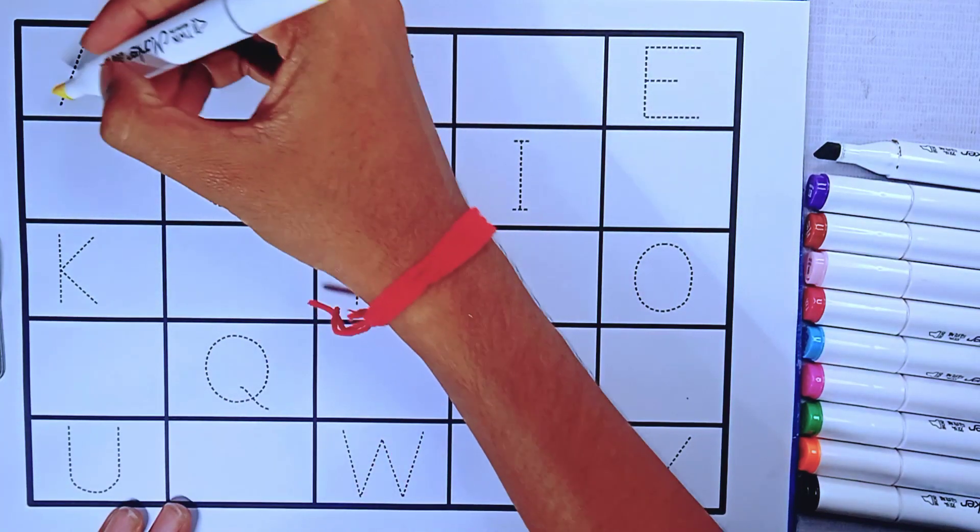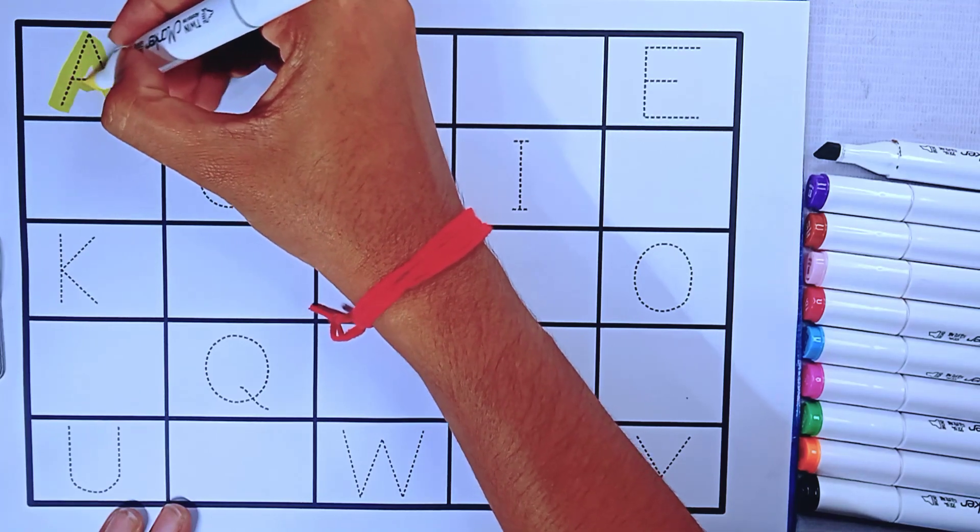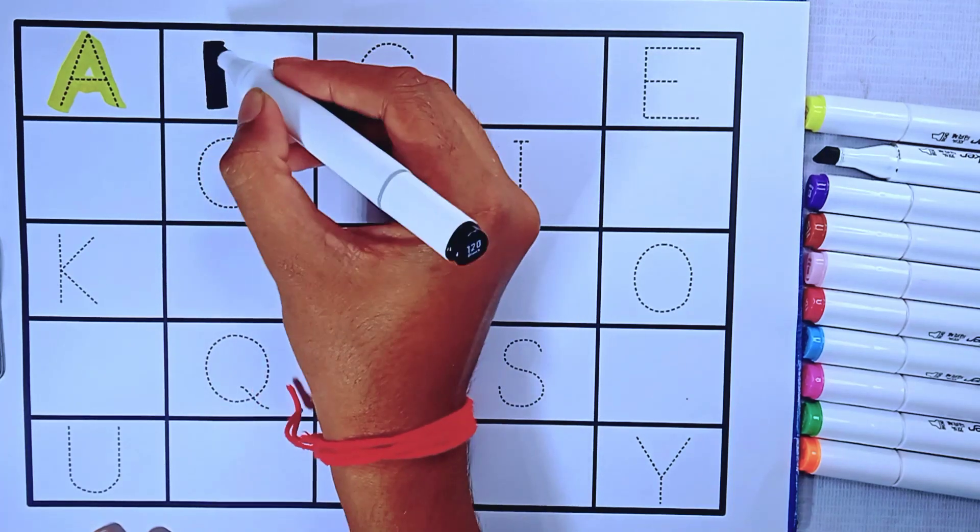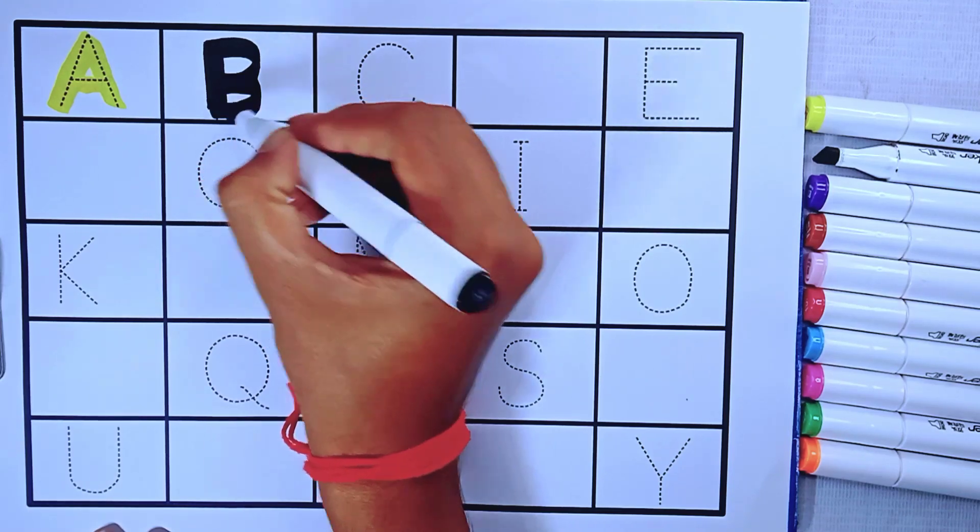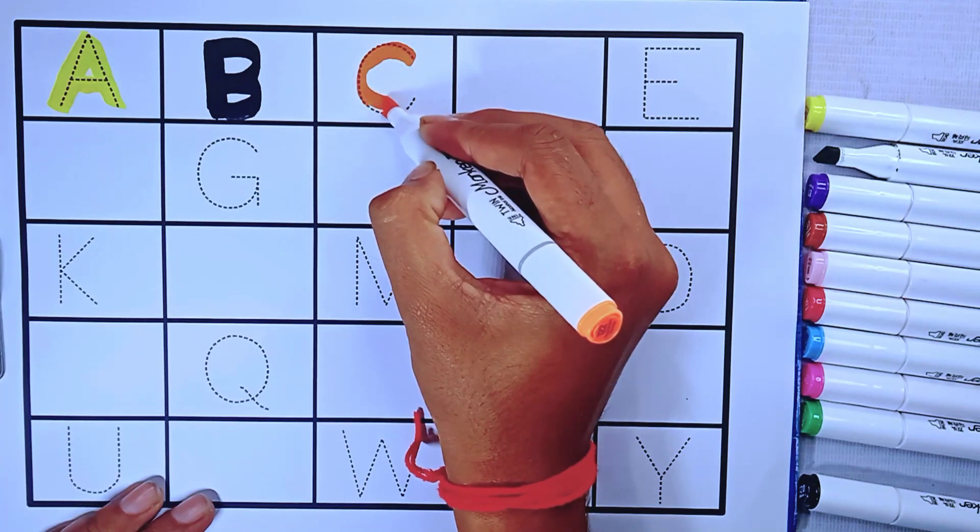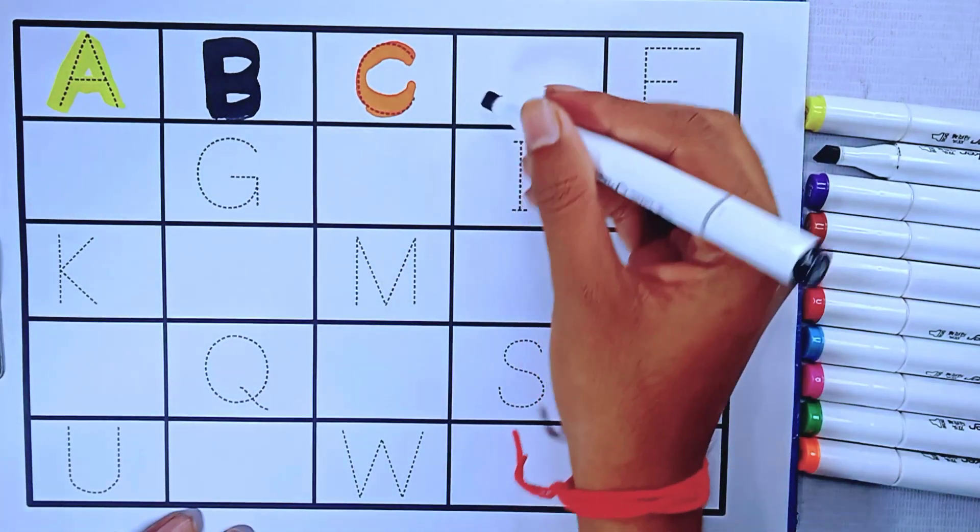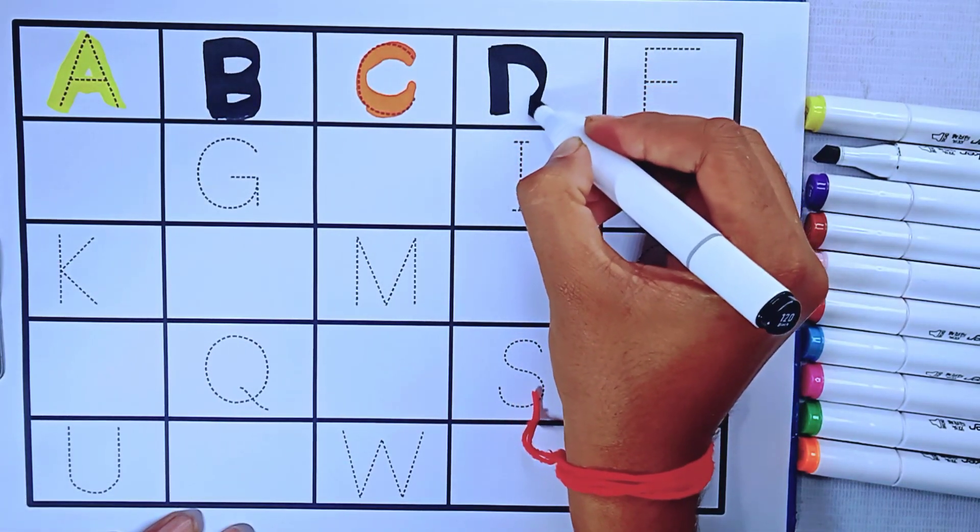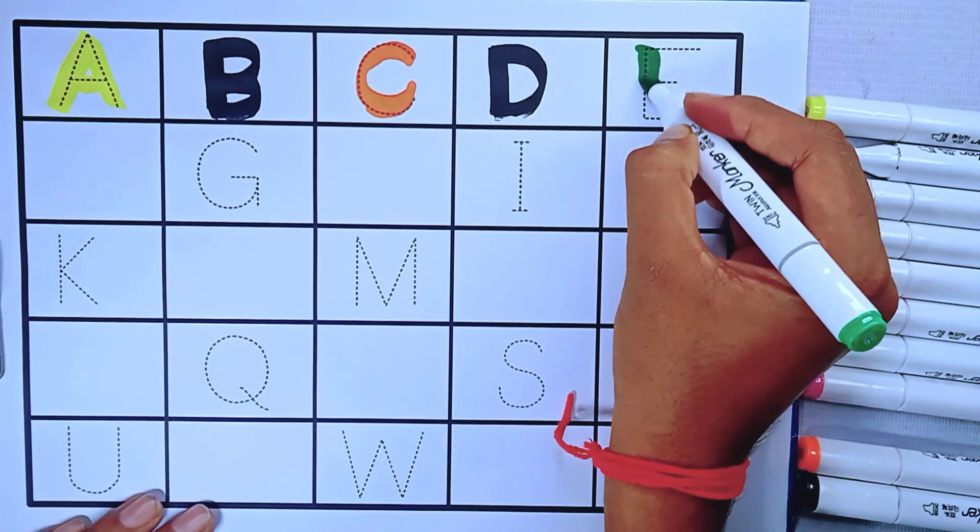Hello kids, welcome to our YouTube channel. So let's go! A is for Apple, B is for Ball, C is for Cat, D is for Dog, E is for Elephant.